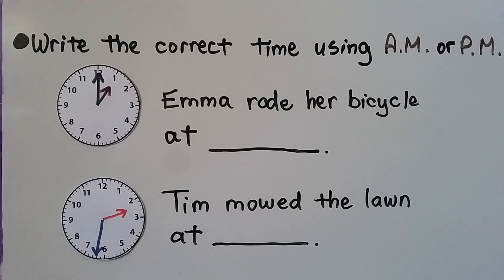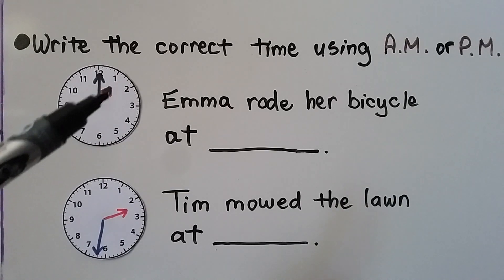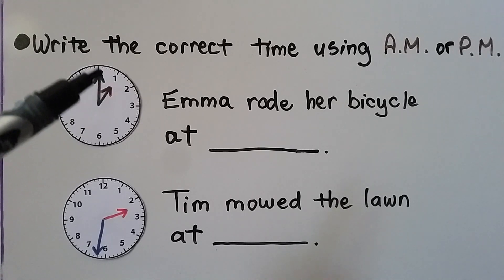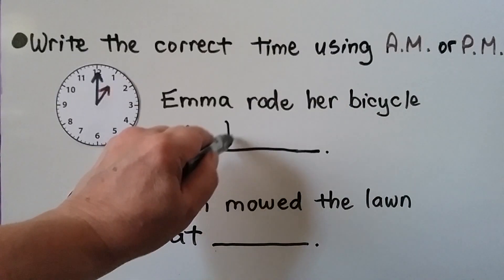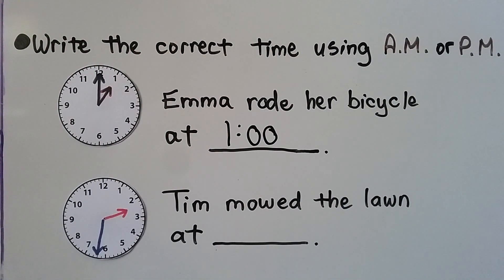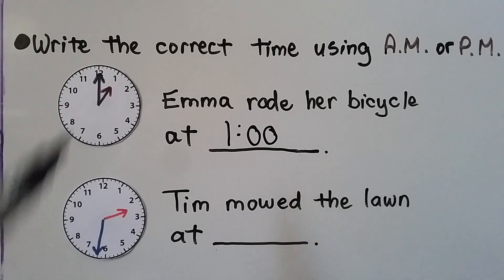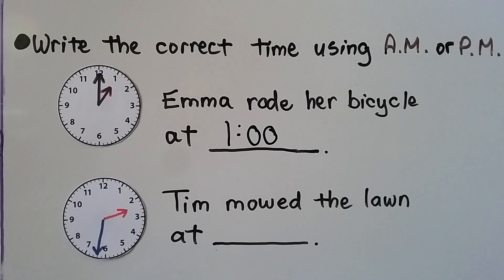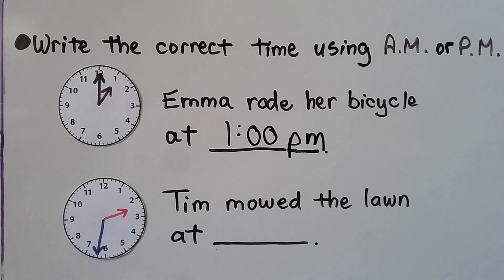We need to write the correct time using A.M. or P.M. It says Emma rode her bicycle. We can see the hour hand is pointing to the one and the minute hand is pointing to the twelve, so that would be 1:00. But is it A.M. or P.M.? Well, if this was A.M. it would be one o'clock in the morning, just past midnight — and I don't think Emma would be out riding her bike after midnight. So this must be the afternoon. It must be 1:00 P.M.